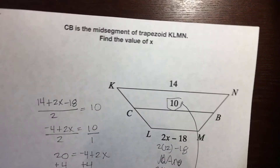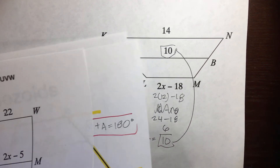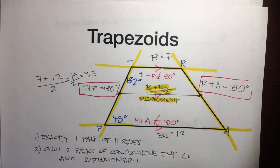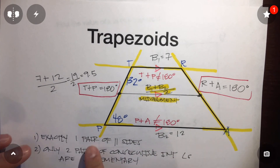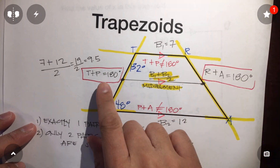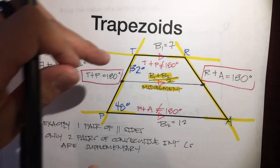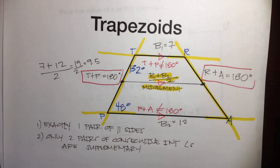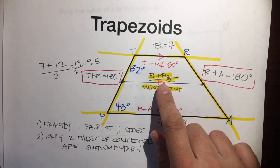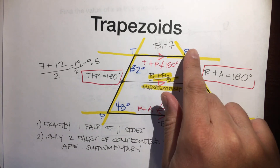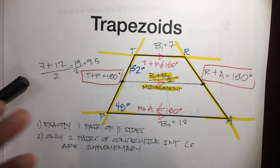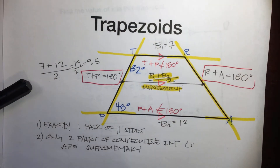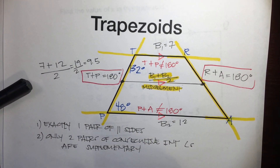Those are trapezoids. Just remember: exactly one pair of parallel sides, only two pairs of consecutive interior angles are supplementary, and the midsegment formula is base one plus base two divided by two — the average of the two bases. Alright, that's it. Trapezoids. Have a great day, Mr. Q.